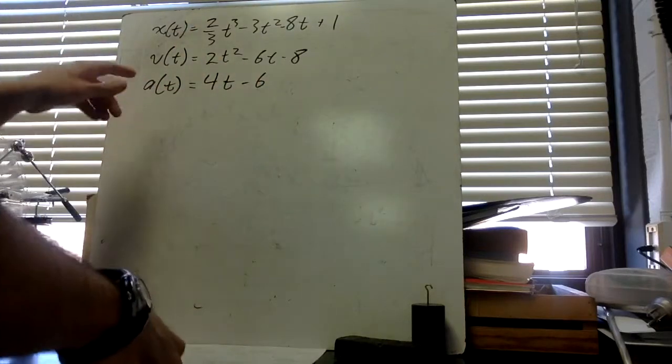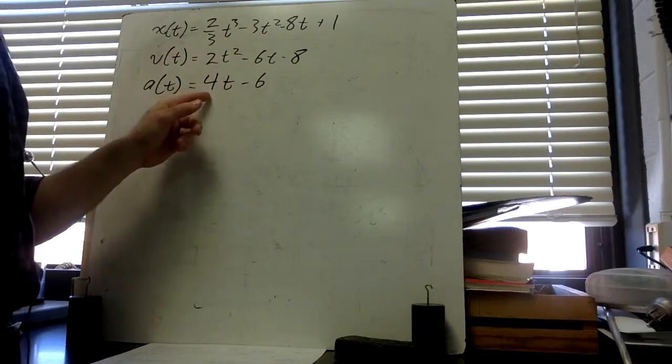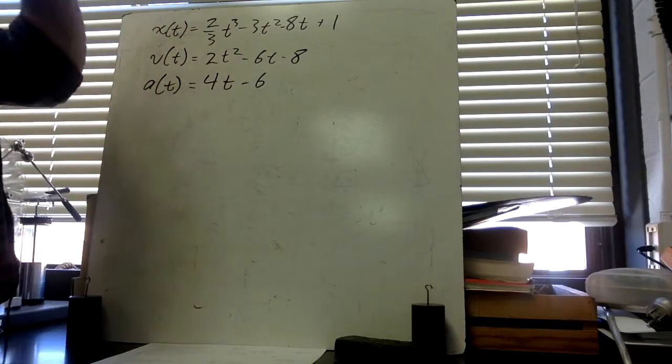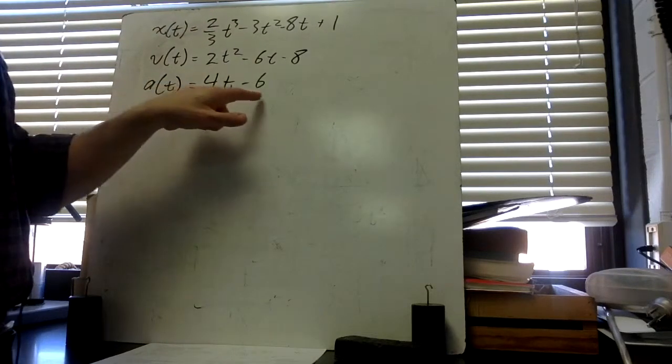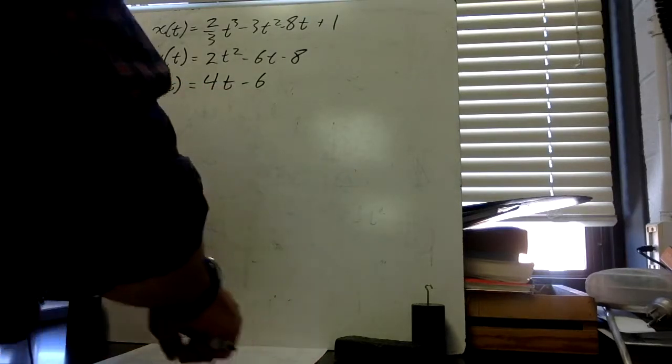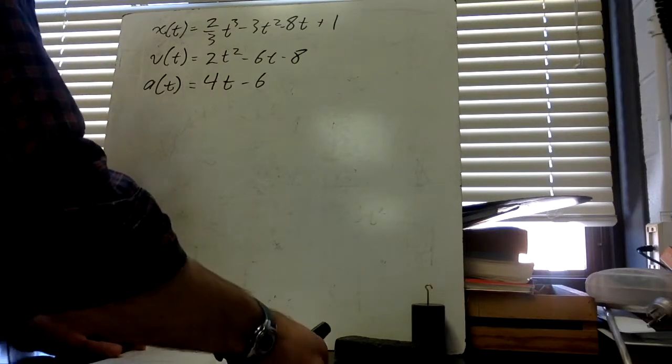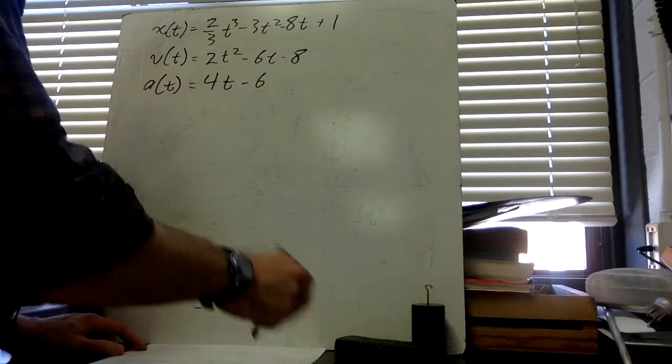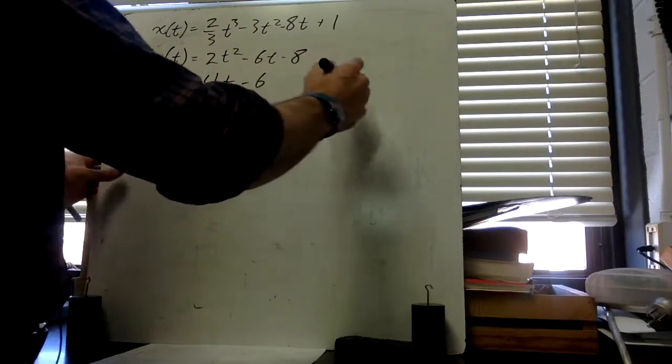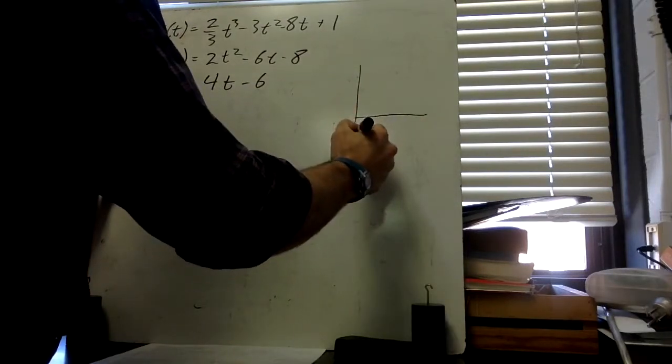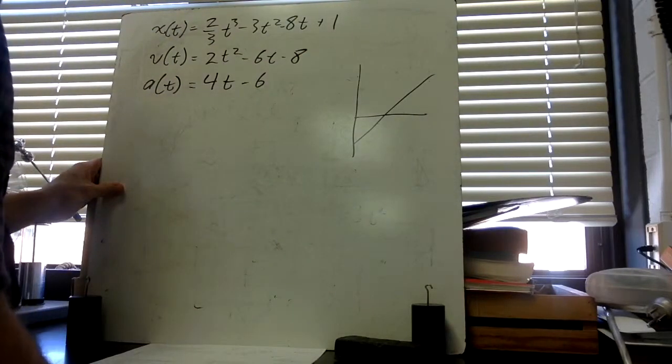Notice, by the way, the acceleration is changing. Now we're dealing with a situation where we have a changing acceleration. x(t) is order to the third, v(t) order squared, and a(t) is a linear idea. Then part C: is the particle moving with constant acceleration? The answer is no. This is not a constant acceleration. This is a changing acceleration. When you look at the graph of this, 4t - 6, the value of the acceleration is not constant.